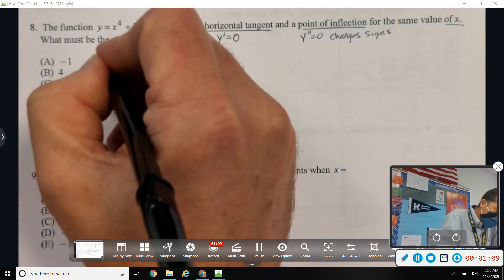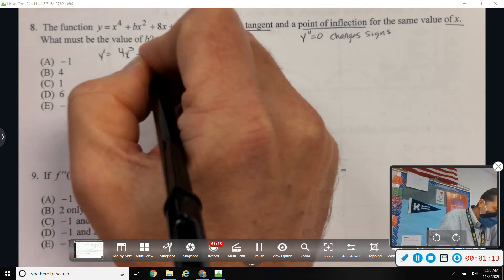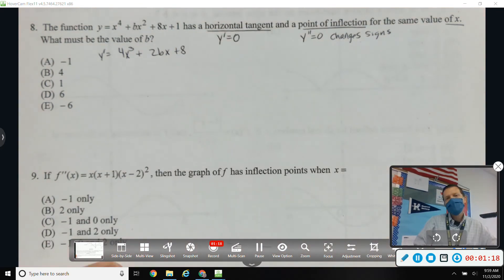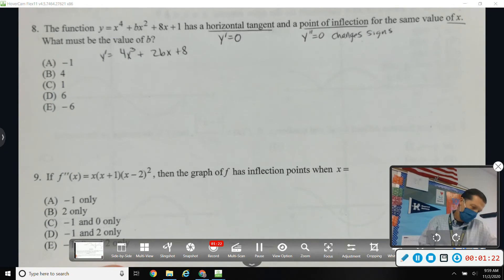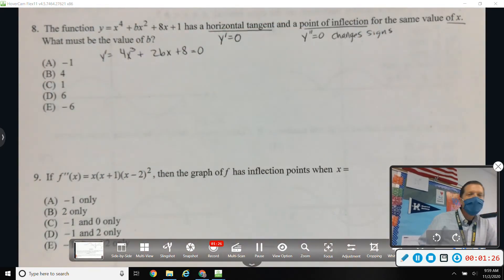First derivative. 4x cubed plus 2bx plus 8. Okay, that doesn't help me a whole lot. I set it to 0, but that doesn't help much either.